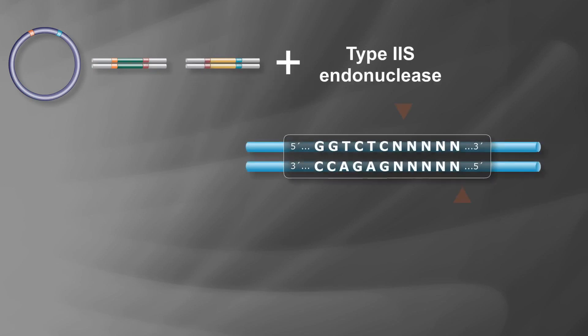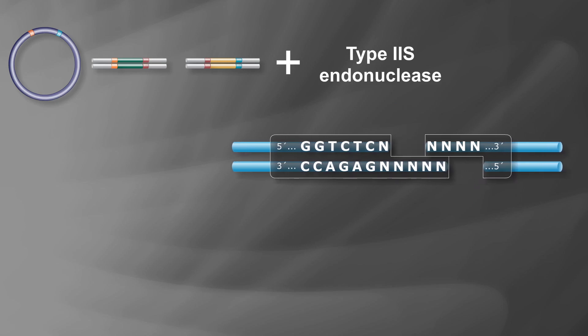Golden Gate assembly is a method for assembling multiple DNA fragments relying on the activity of type 2S endonucleases that cleave outside of non-palindromic recognition sites.